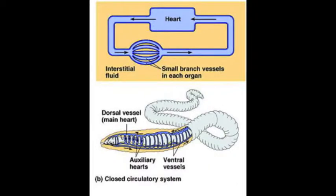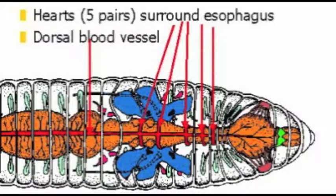Earthworms have a closed circulatory system, which means the blood is contained within a completely closed system of vessels, which form a closed loop, usually with some sort of pumping organ, like a heart.